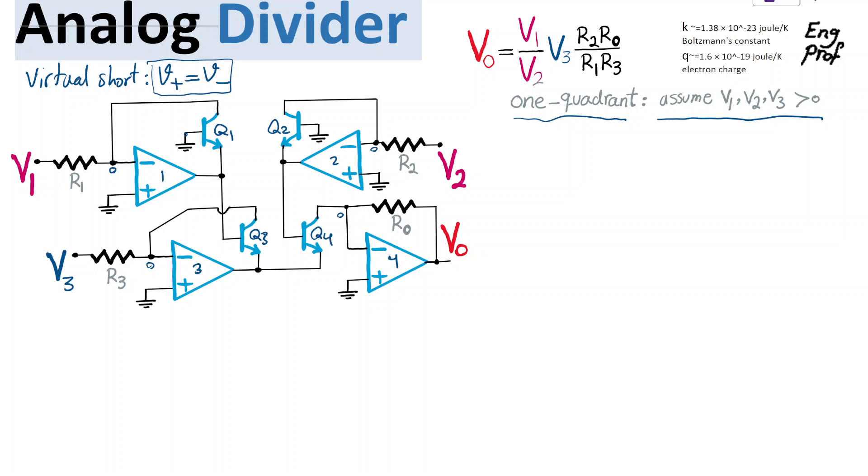So for transistor Q1, we can see that from the base, which is effectively ground or at zero volt. So from there, we have a voltage drop from base to emitter, VBE1.